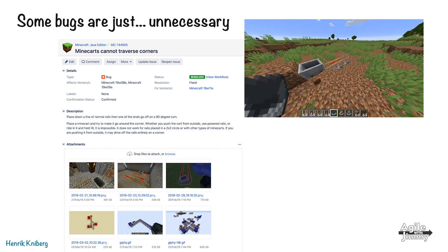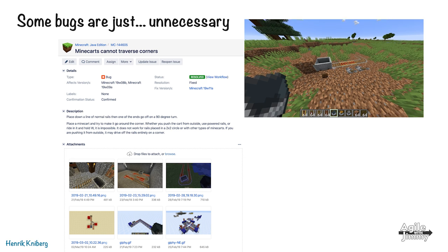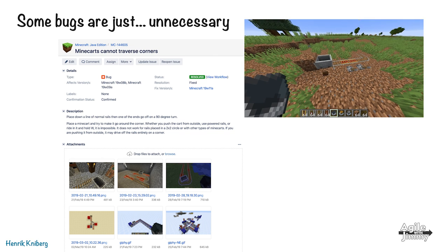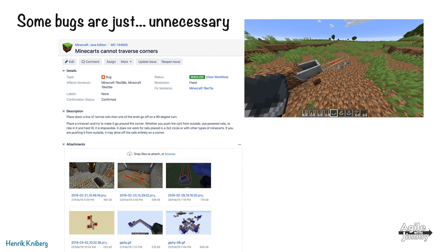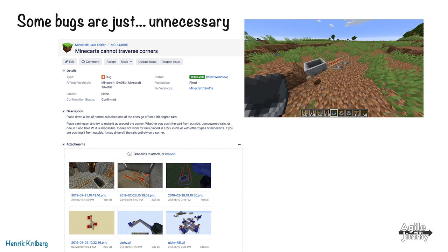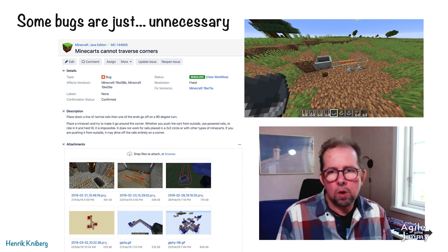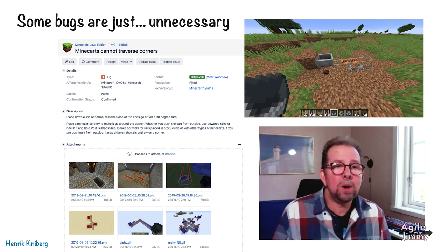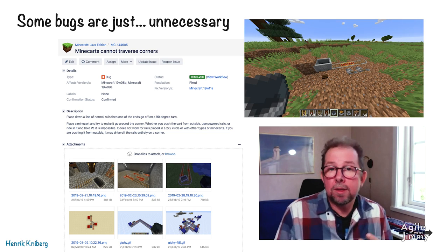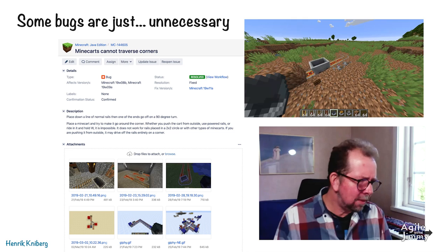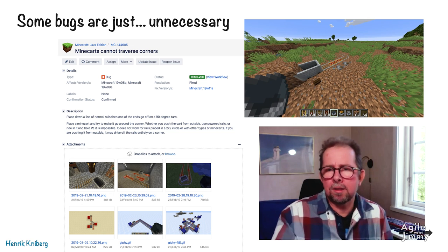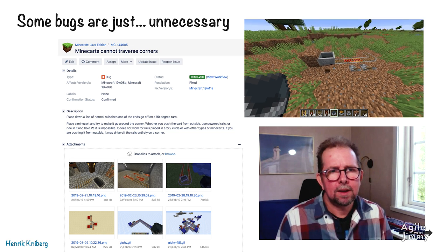But we can't always hide behind that excuse, saying bugs happen, it's unavoidable. Some bugs are unnecessary, they shouldn't really happen. For example, this one, mine carts cannot traverse corners. This happened about a year ago. Suddenly, this very basic thing, a mine cart in Minecraft could not turn corners on a rail. Pretty obvious thing would have been really easy to notice if we had just tested. But of course, whoever created that bug accidentally was probably working on something completely different and had no idea this could have any effect on mine carts. So this happens all the time. And the kind of question in our minds was, can we automate this? Can we automate some of the more obvious tests such as these?